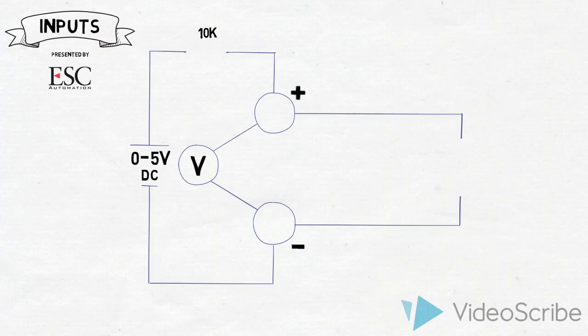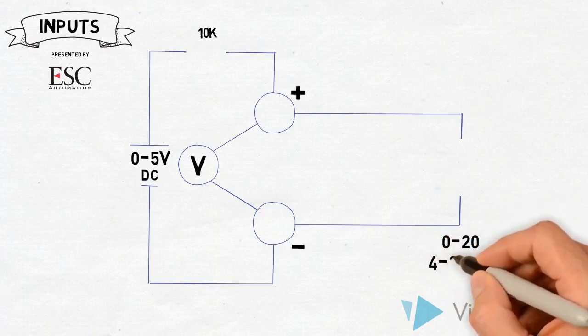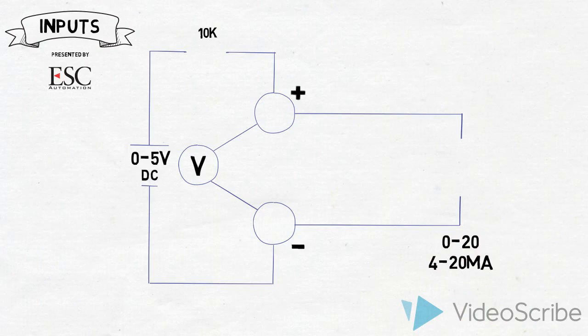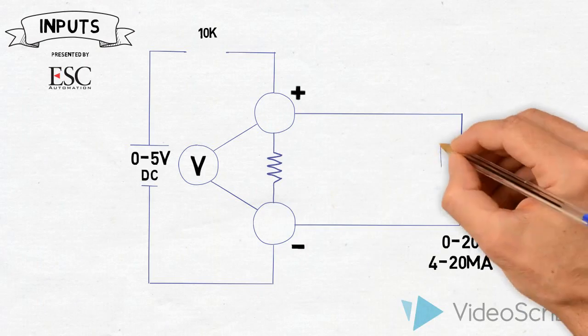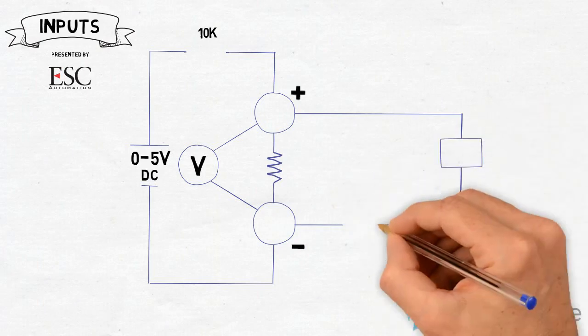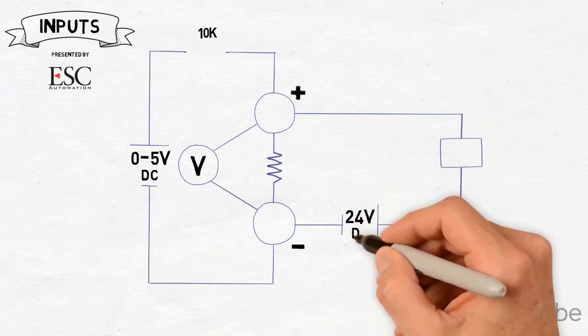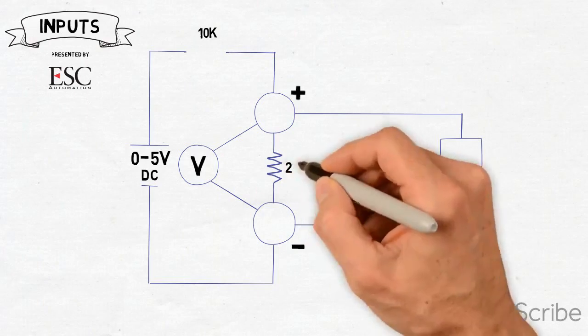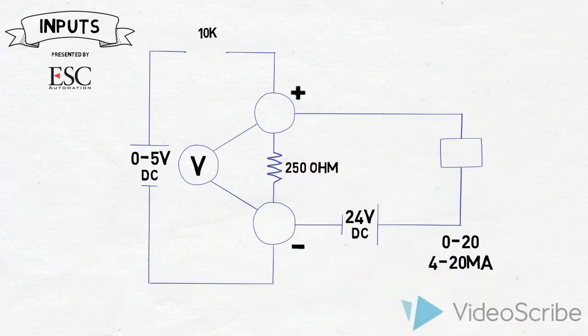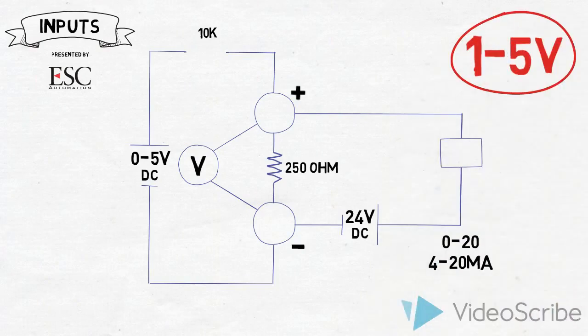The next input is a device that provides a 4 to 20 milliamp signal—sometimes 0 to 20 or 4 to 20 milliamps. When you set the panel to 4 to 20 milliamps on the dip switch, the panel puts in a 250 ohm resistor. If you have a device with a separate power supply, usually a 24 volt DC power supply, you get a voltage reading across this 250 ohm resistor. Using Ohm's law, if you put 4 milliamps through 250 ohms, you get 1 volt. If you put 20 milliamps through 250 ohms, you get 5 volts. The voltmeter reads 0 to 5 volts.